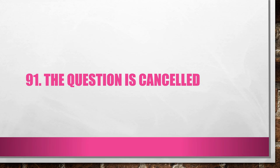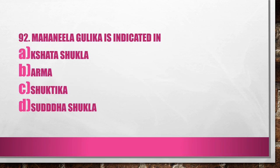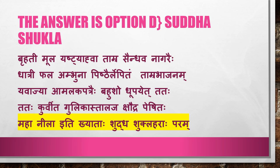Question 91 is cancelled. Question 92. Mahanila Gulika is indicated in: A. Shadashukla, B. Aramma, C. Shuktika, D. Shuddha Shukla. The answer is Option D, Shuddha Shukla. Mahanila Gulika is used for Shuddha Shukla disease.